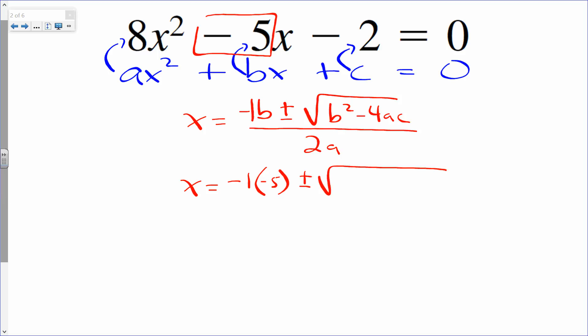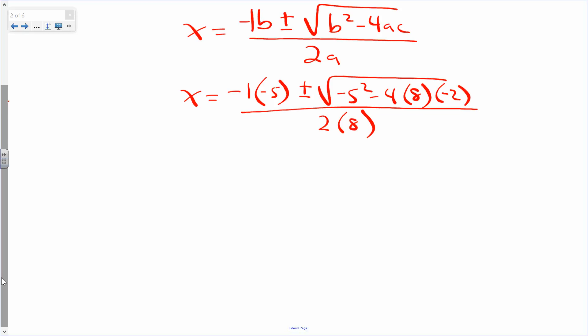b squared, in this case, is going to be negative 5 squared minus 4 times a, in this case is 8, times c which is negative 2. All over 2a. In this case, 2 times 8.